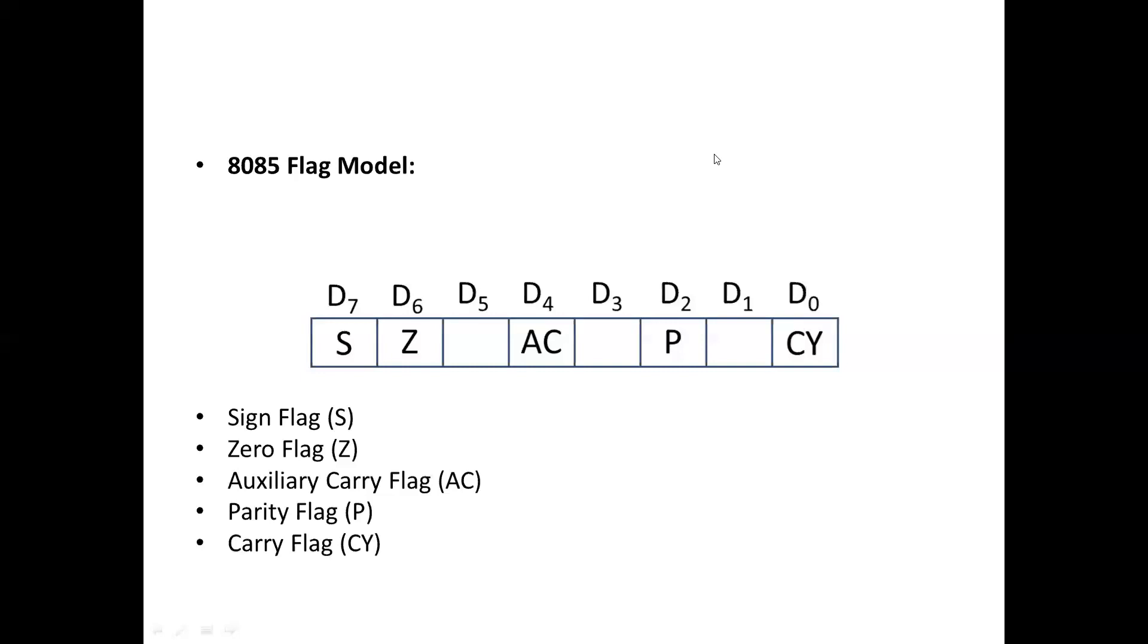When the sign flag equals 1, these are called signed numbers. Next, zero flag. If any operation of ALU result is 0, then zero flag is set to 1 and reset if the result is non-zero. Bit 6 is set or reset for this purpose.